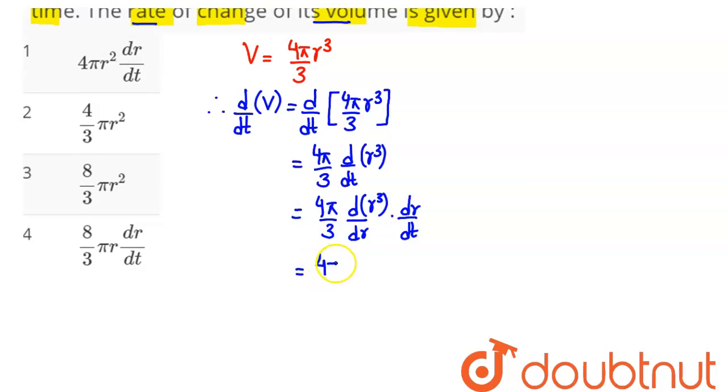So this can be written as 4 pi by 3. Now differentiation of r cube gives us 3r square into dr by dt. The 3 and 3 cancel out, so we have 4 pi r square dr by dt.